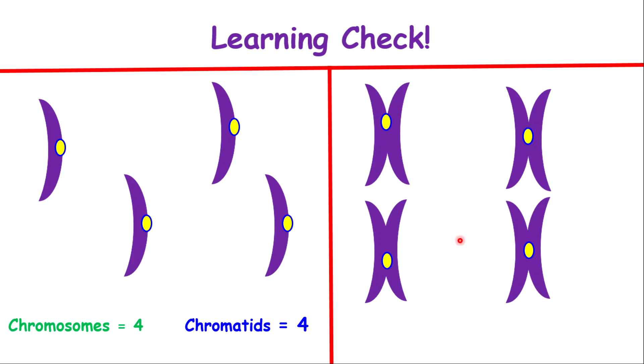On your right, how many chromosomes and how many chromatids? You are seeing four centromeres, so that means four chromosomes. And if you notice, each chromosome has two chromatids, therefore it's eight chromatids. Beautifully done.